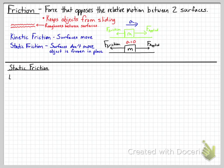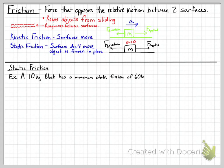Those are the basics of friction, and we're going to go further into this. We're going to talk about static friction. I'm going to give you an example where I have a 10-kilogram block, and it's going to have a maximum static friction of 60 newtons. Then we're going to do a what-happens scenario — what happens if I do this first, and what happens second if I do this.